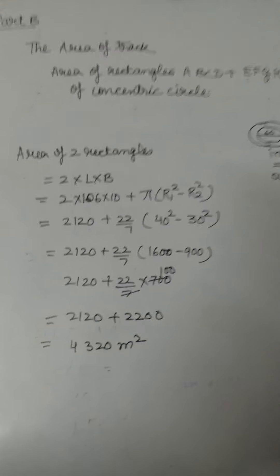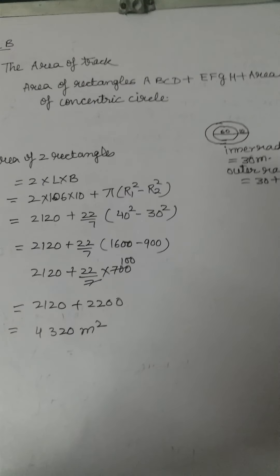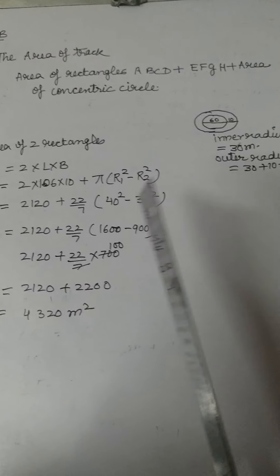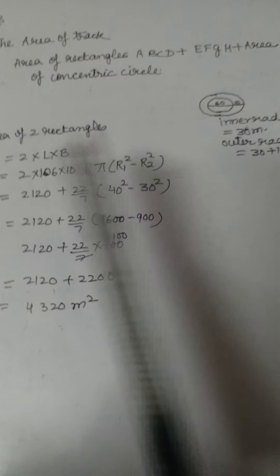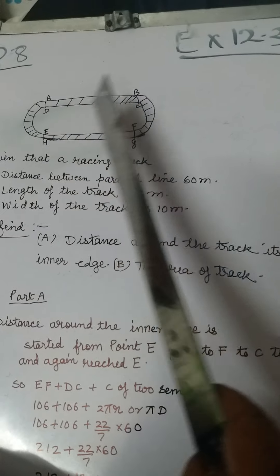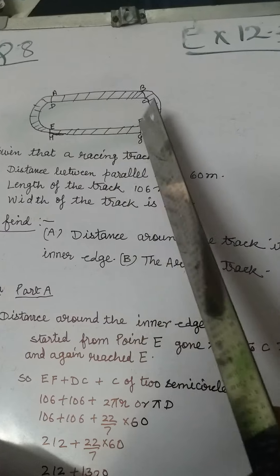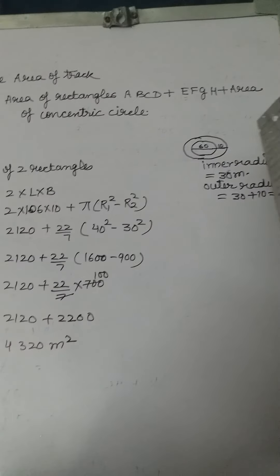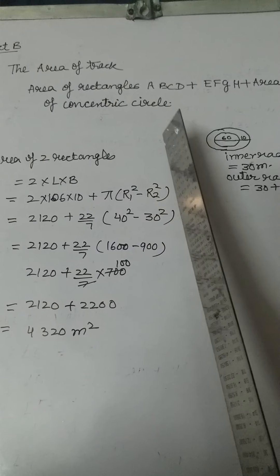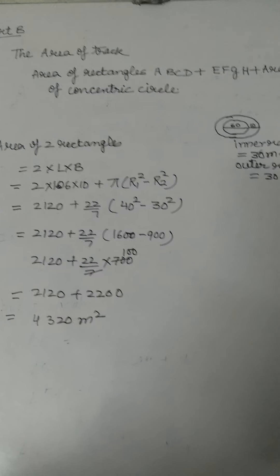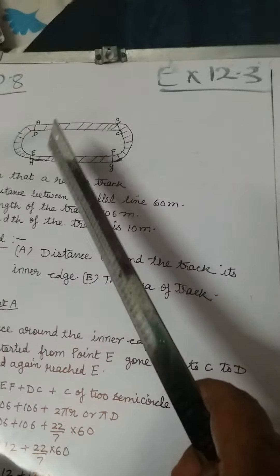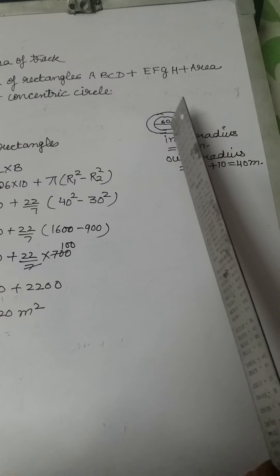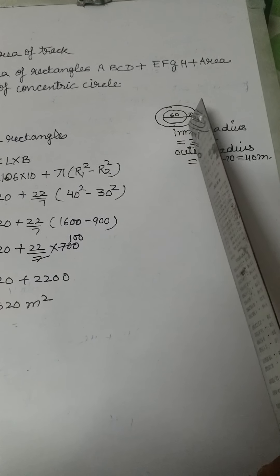Now we have to find the area of the track. The area of the track means the area of the shaded part. This consists of the area of two rectangles — one is ABCD and another is EFGH — plus the area of one concentric circle. The two semicircular ends of the track come together to form that concentric circle.